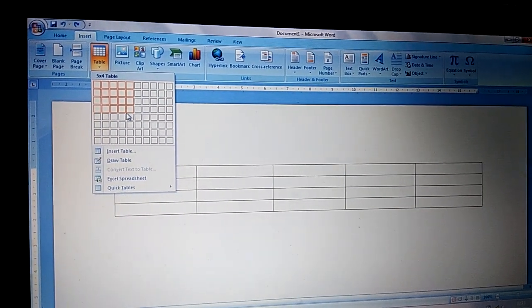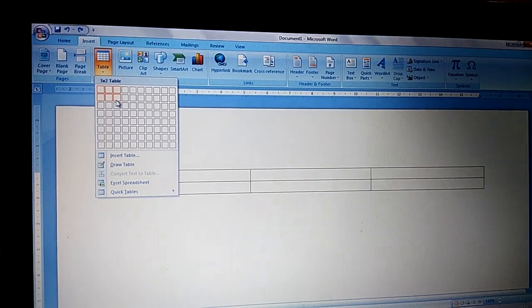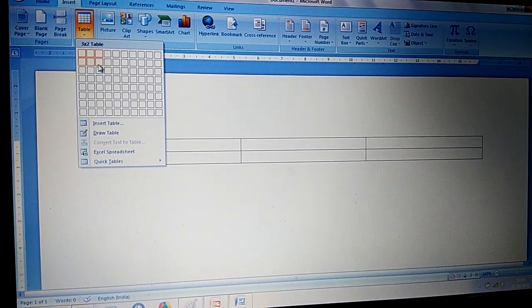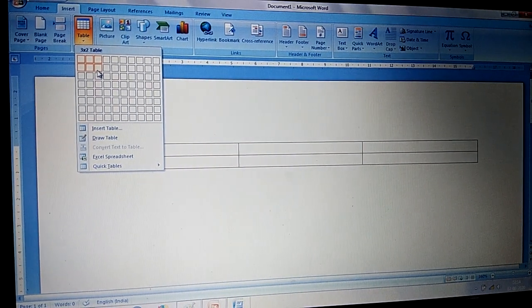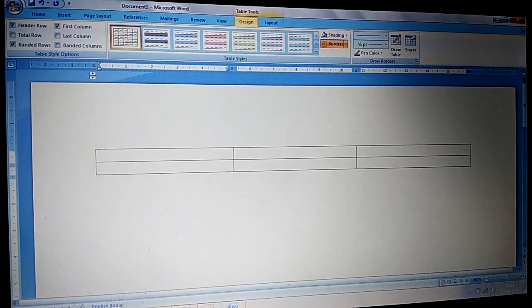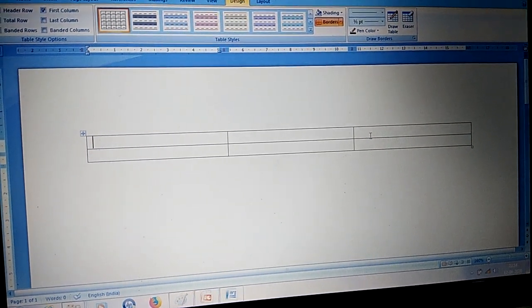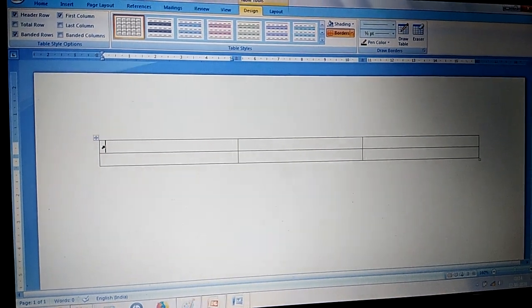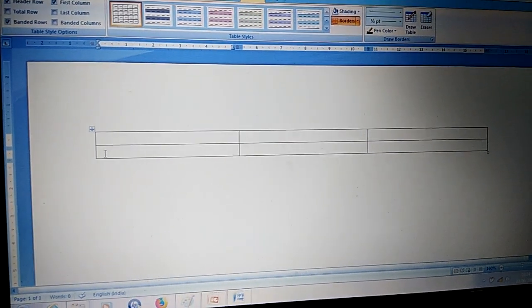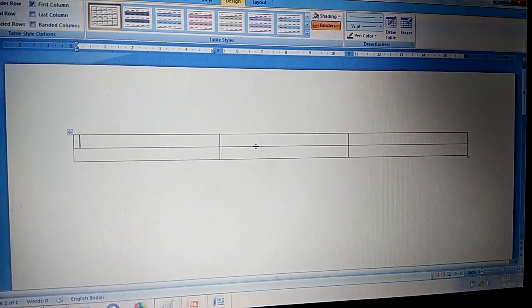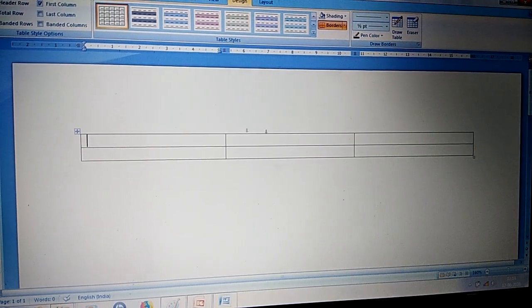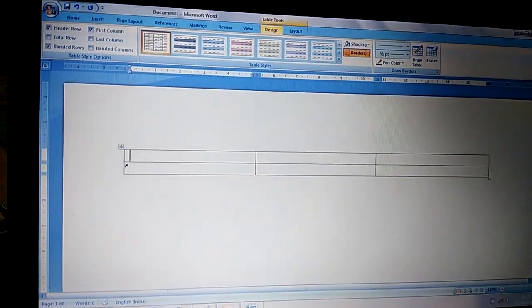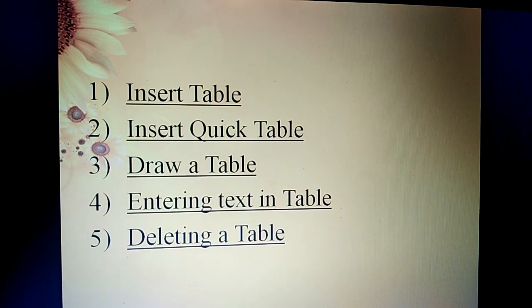After selecting the number of rows and columns, click the left button of your mouse. Now see, this is your table that you have already selected. Here are two rows—row means horizontal, so row number one and row number two. And these are columns: column one, column two, and column three. Columns are vertical and rows are horizontal. This is the first method to insert a table with the help of the Insert tab.